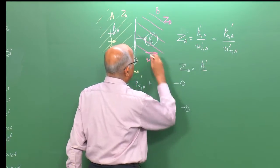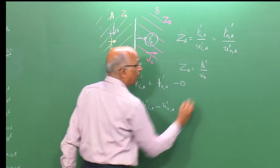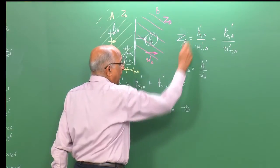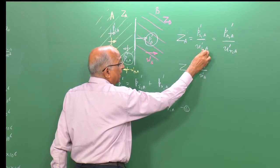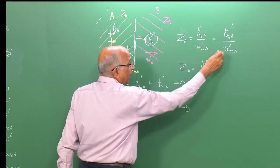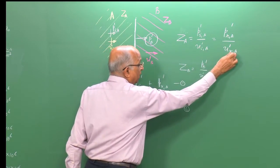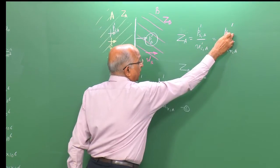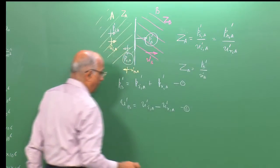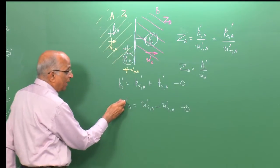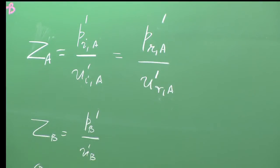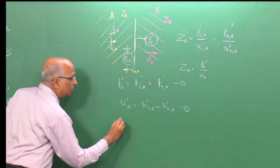From the impedance equation for A, I determine: u_ia = p_ia prime / Z_a; u_ra prime = p_ra prime / Z_a; and u_b prime = p_b prime / Z_b.